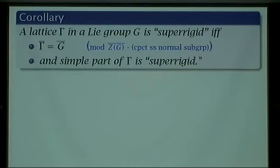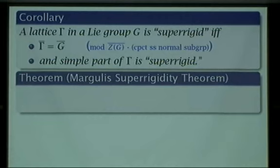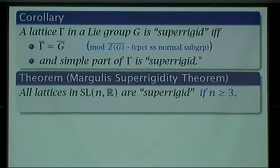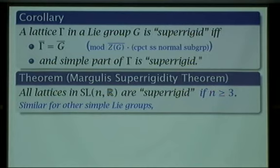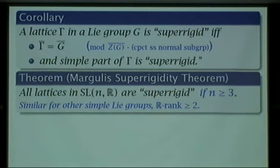Simple groups are hard to deal with, and it's still not known which lattices are superrigid in all simple groups. The big result is the Margulis Superrigidity Theorem: every lattice in SLnR is superrigid — except in SL2R, they're not. In fact, this theorem works for most simple groups: for any simple Lie group with real rank at least two, all of its lattices are superrigid. The trouble is we don't know what happens in the rank-one case — some are, some aren't, and some we don't know. But if experts could finish up just the simple groups, we'd know for every Lie group which lattices are superrigid.